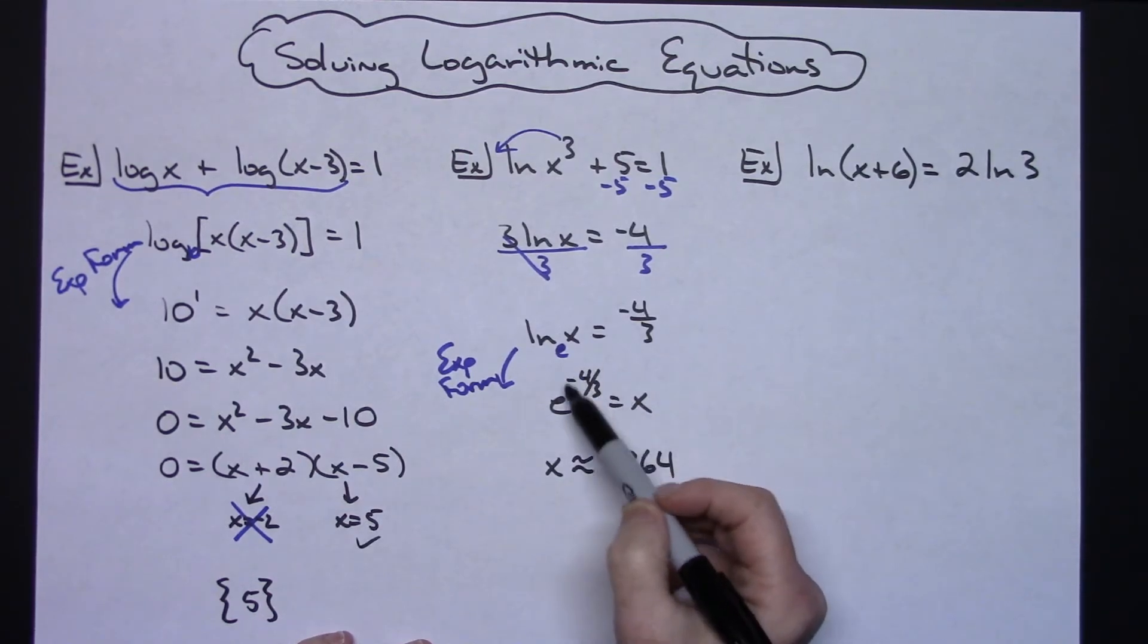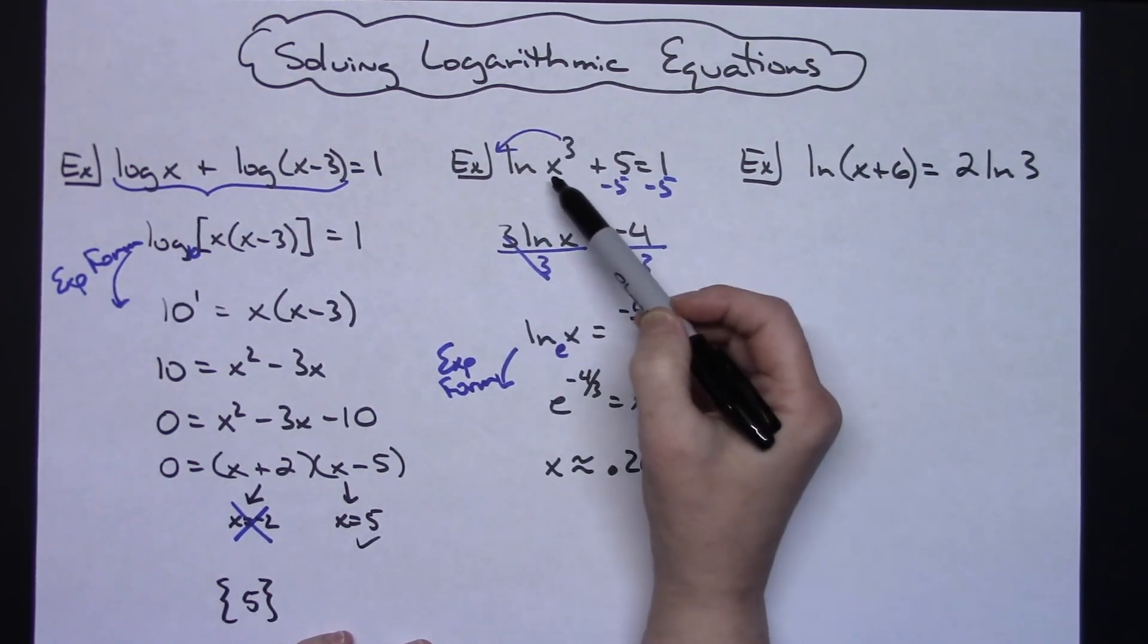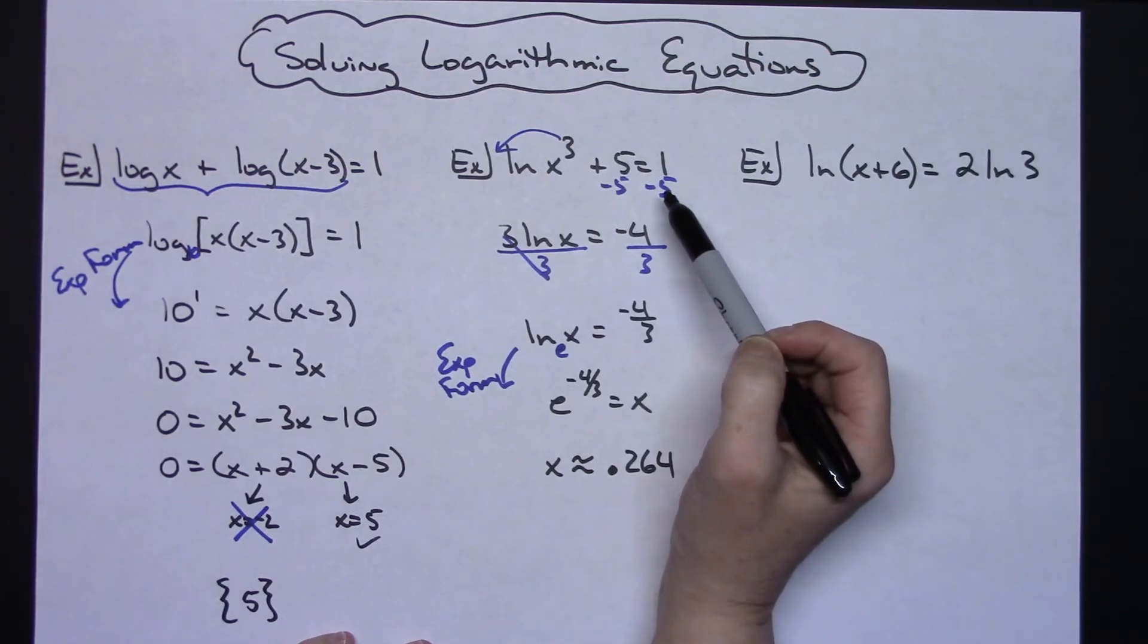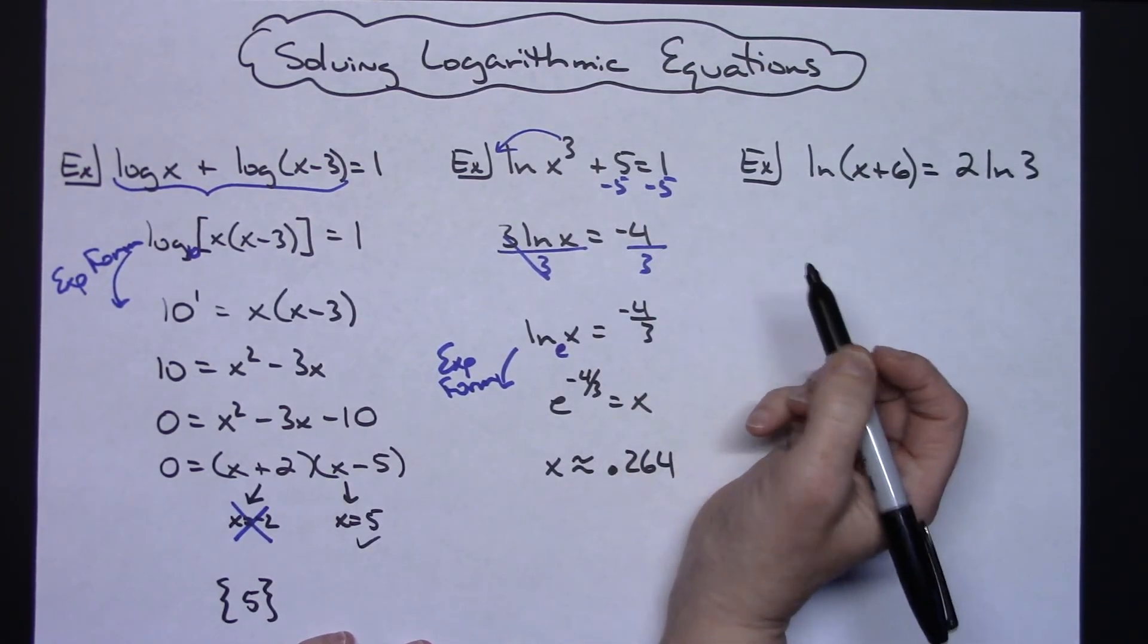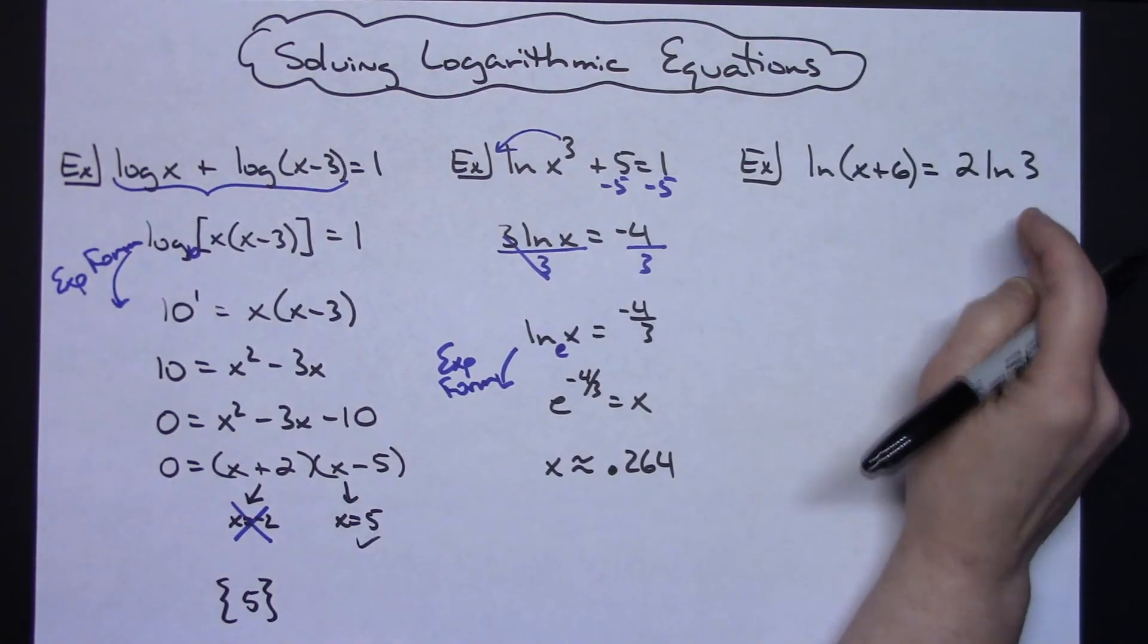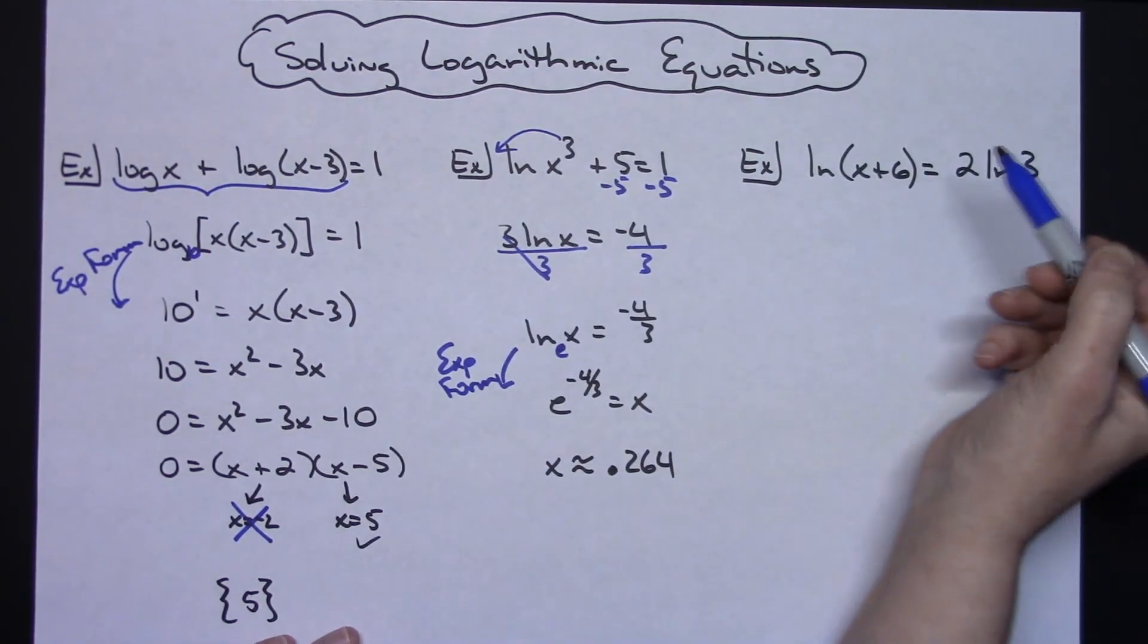On that, again you would want to take this and plug it back in and see what you get. But this one, if I left it in this form right here and I plugged in e to the negative 4 thirds, then it would real easily, you're going to be able to check and see that this is going to check. On this last example here, first thing I think I'm going to do is if I can unjump a frog, I can also jump the frog back up on that log.